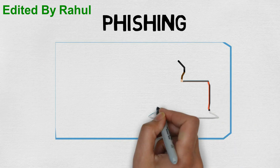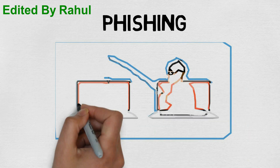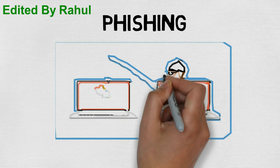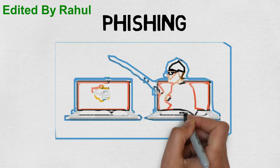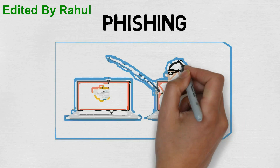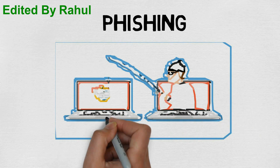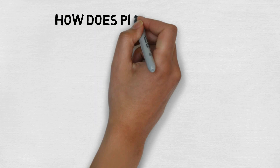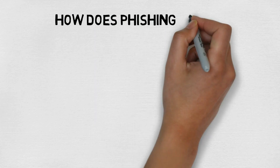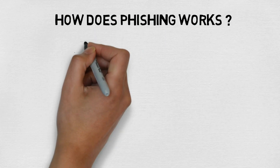Phishing is a process used by scammers to steal sensitive information like username, password, bank account number, ATM pin, etc., through a website, email, or SMS.